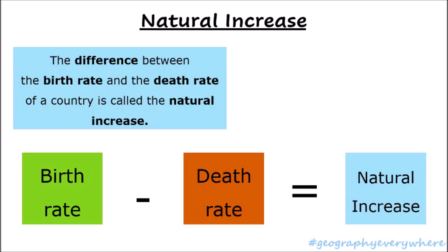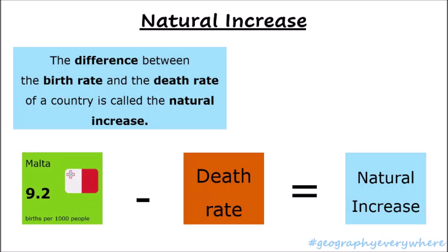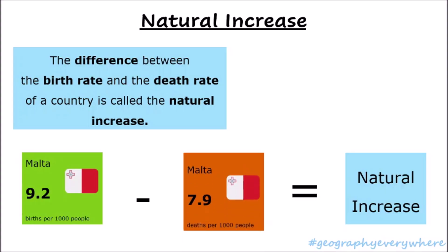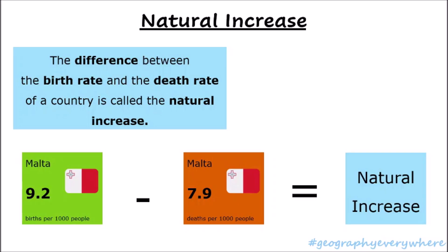Let's look at the natural increase of Malta. The birth rate in Malta is 9.2 and the death rate is 7.9. So if we work out 9.2 minus 7.9, the answer is 1.3. And this is called the natural increase.